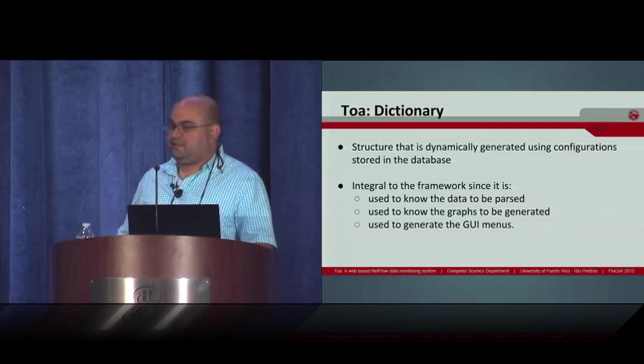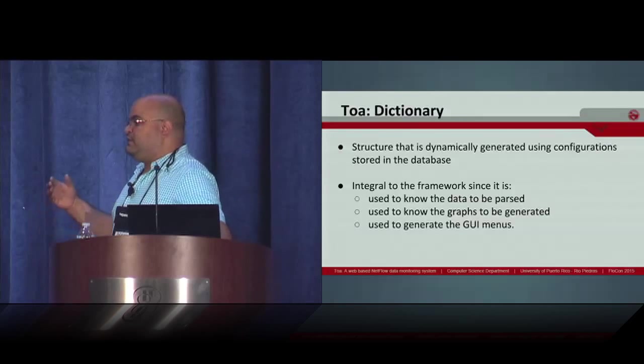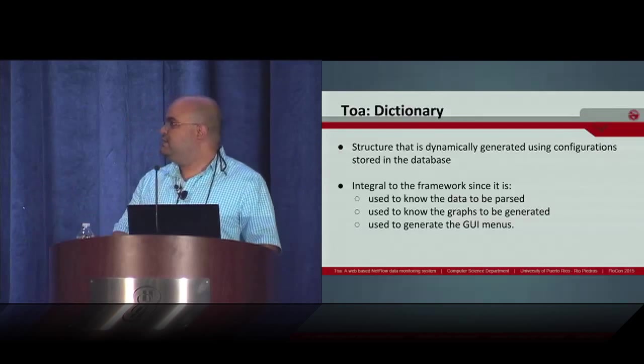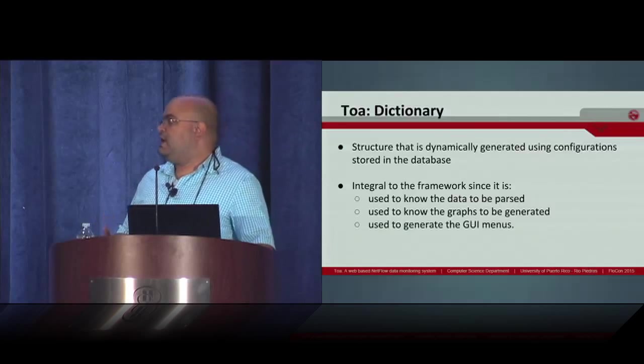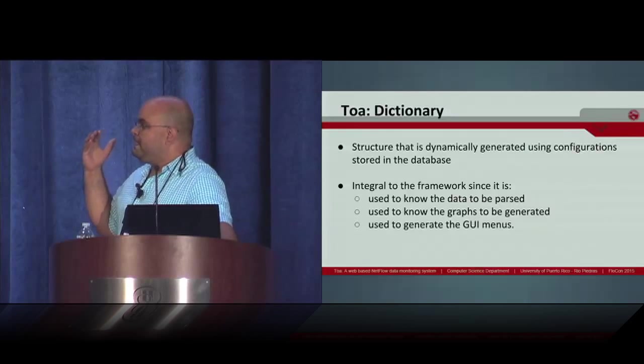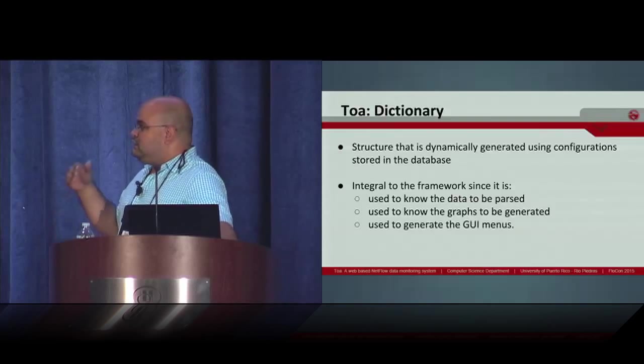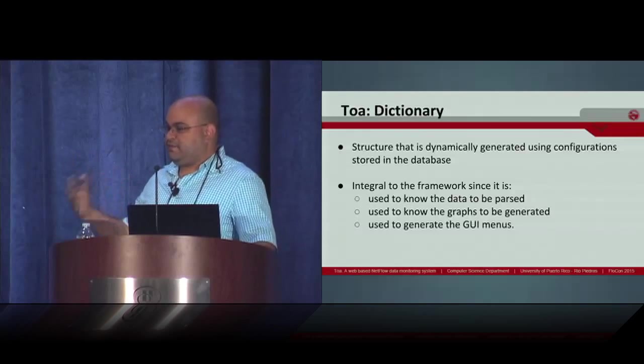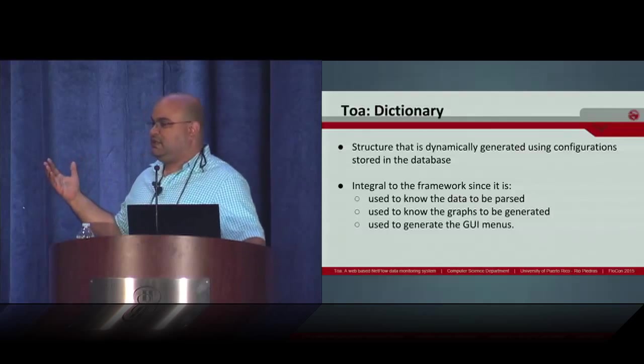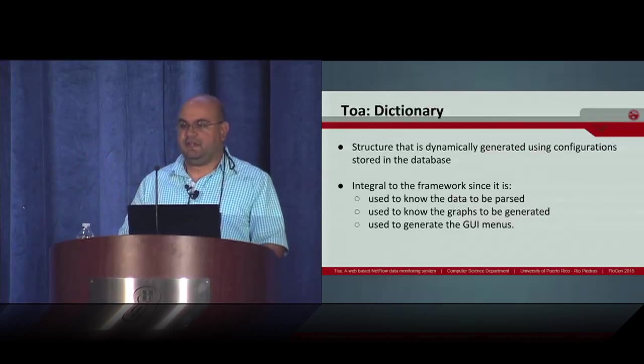The TOA dictionary is a data structure that is generated using the configuration stored in the database. It is the heart of TOA because it is used to know what data needs to be parsed, used by the grapher to know what graphs to generate, and used in the graphic interface to generate the menus.